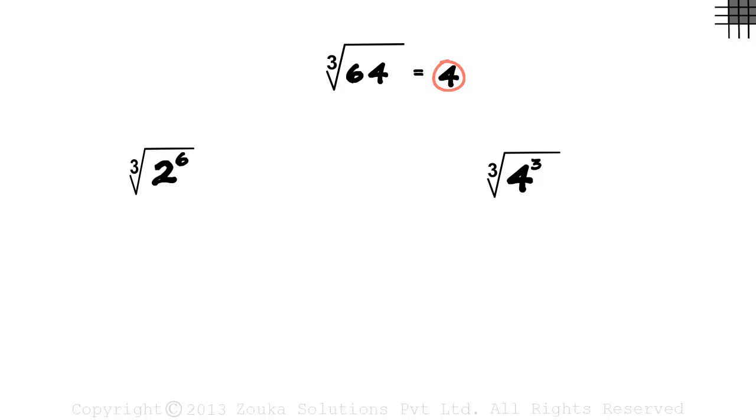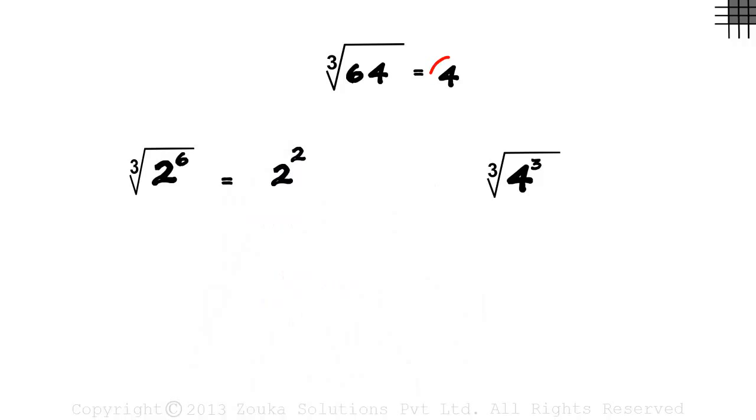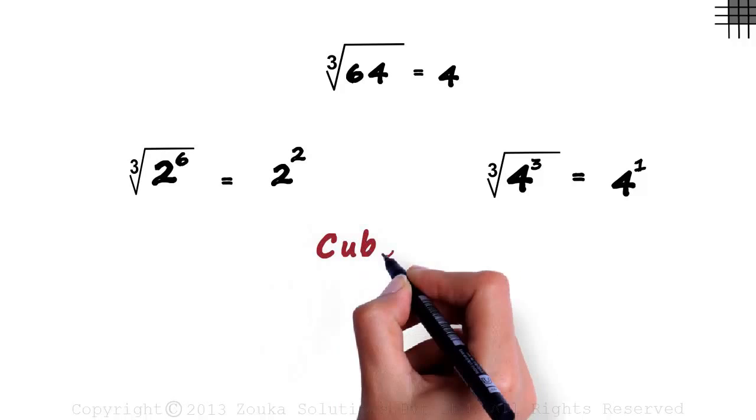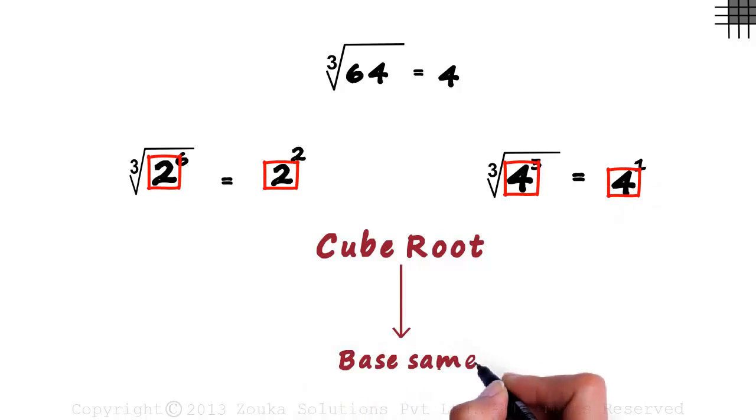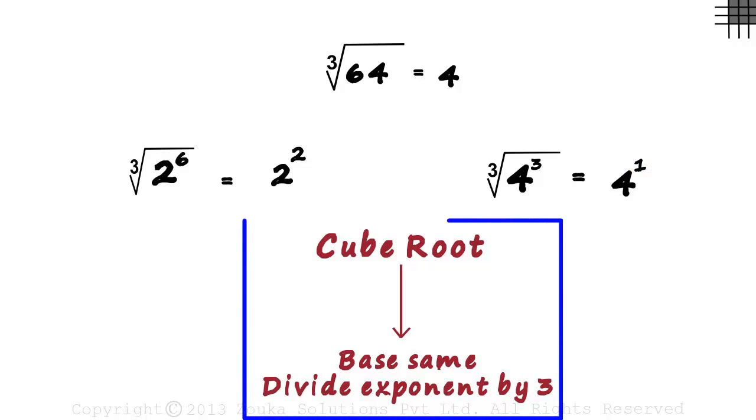Now let's try writing 4 in exponential form. 4 can be written as 2 squared, hence this would equal 2 squared. It can also be written as 4 raised to 1. What do we observe? When we take a cube root of a number in exponential form, the base remains the same and the exponent is divided by 3. 6 became 2 and 3 became 1. Remember: when we take a cube root of a number in exponential form, keep the base same and divide the exponent by 3.